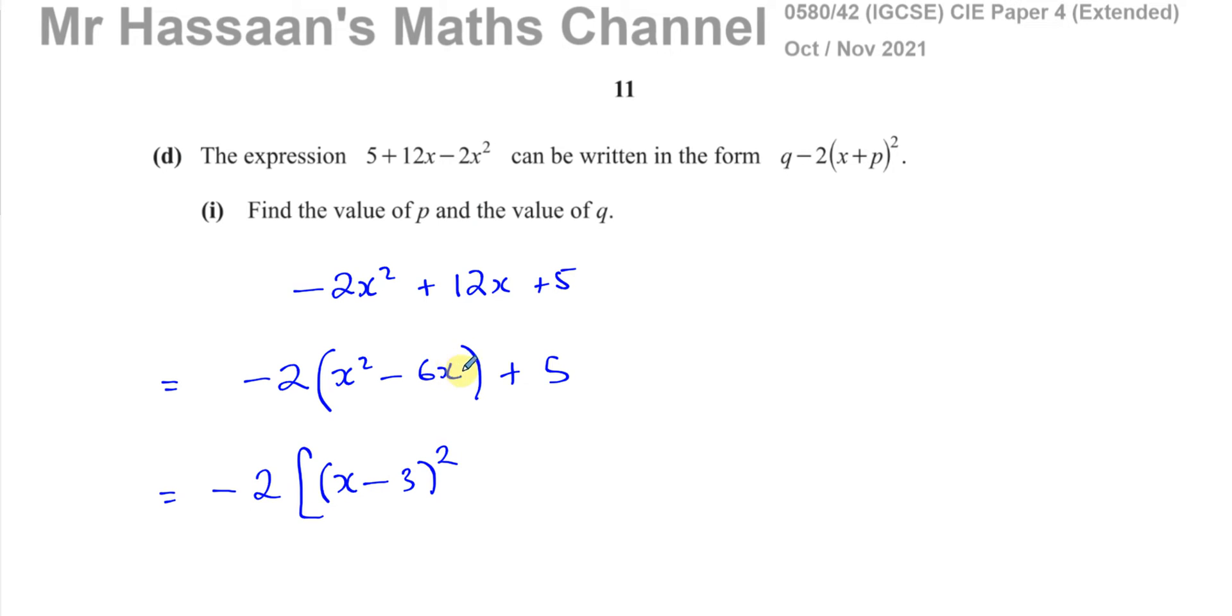Okay, and then I'm going to close this bracket and I'm going to write the +5. So I've completed the square for what's inside this bracket here. That gives me (x - 3)² - 9. If I expand this, I'm going to get x² - 6x + 9 - 9, which gives me x² - 6x, which is the same as that. Now,